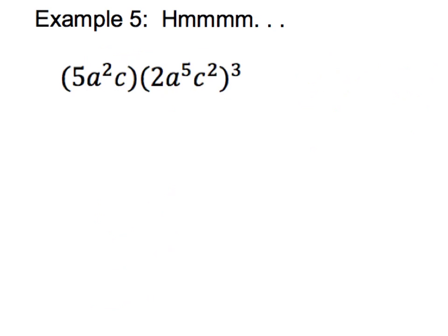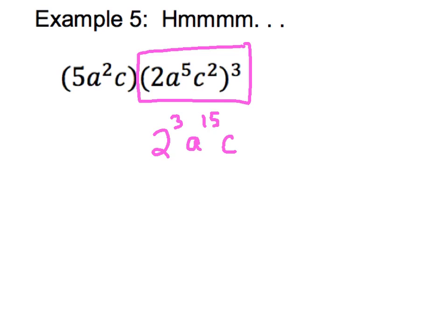Let's take a look at example five. Please write this down. For this problem, the first rule I'm going to apply is the power to a power rule. This part of the problem has that outer exponent. Remember, with the power to a power rule, that outer exponent 3 is going to apply to every term in that parenthesis. So that's going to give me 2 to the third times a to the fifteenth — with power to a power we multiply exponents — times c to the sixth. I'm still going to take that whole product and multiply it times my 5a squared c from my first parenthesis. But that third power on the outside only applies to the parenthesis that it immediately follows.